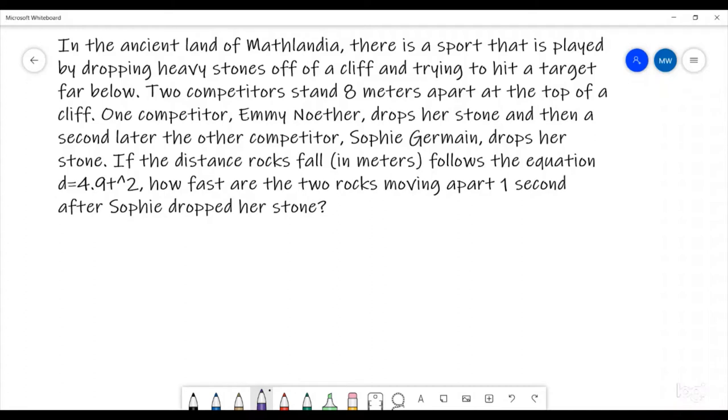For today's problem, I'm going to be talking about a sport that was played in the ancient land of Mathlandia. There's a sport that's played by dropping really heavy rocks off of a cliff and then trying to hit a target far below. Two competitors are going to stand eight meters apart at the top of a cliff. The first competitor, Emmy Noether, drops her stone, and then a second later, the other competitor, Sophie Germain, drops her stone.